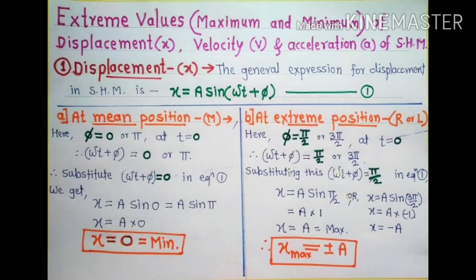At extreme position — left extreme or right extreme — at time t = 0, φ = π/2 or 3π/2. Therefore ωt + φ = π/2 or 3π/2. To find the value of displacement at extreme position, we substitute ωt + φ = π/2 or 3π/2 in equation one, giving x = A sin(π/2) or x = A sin(3π/2).